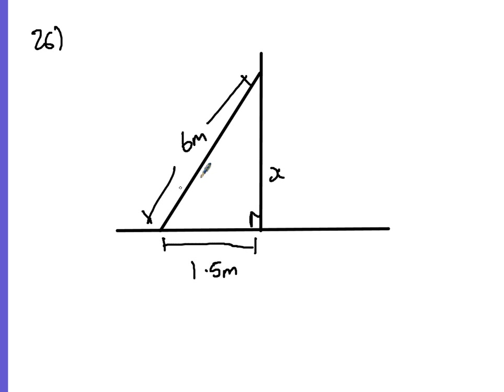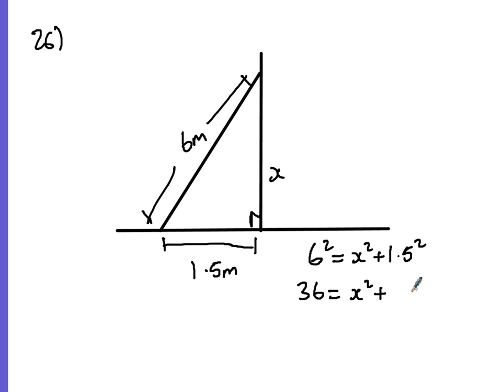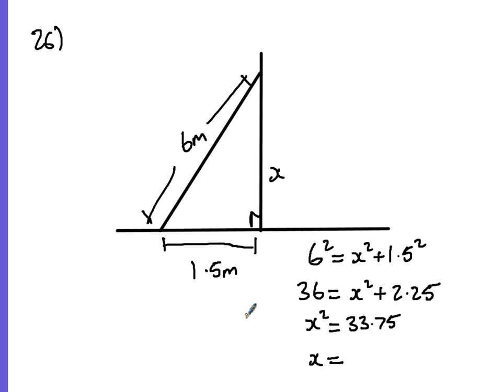Using Pythagoras: the longest side squared equals the sum of the other two sides squared. So 6² = x² + 1.5², which gives 36 = x² + 2.25. Subtracting 2.25 from 36 gives x² = 33.75. Square rooting 33.75 gives x = 5.8 metres to 1 decimal place.